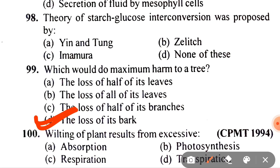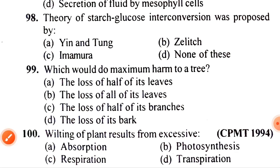Next: wilting of plants results from excessive A. Absorption, B. Photosynthesis, C. Respiration, D. Transpiration. The correct answer is D — transpiration. So that was all about today's questions. Thank you for listening.